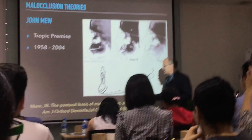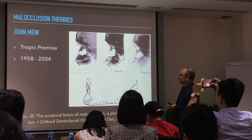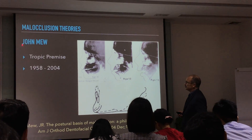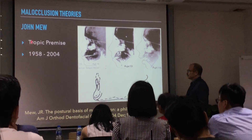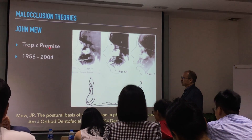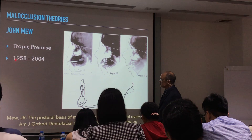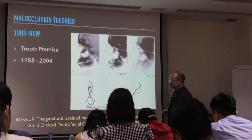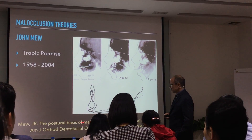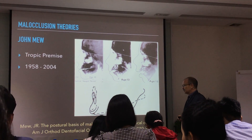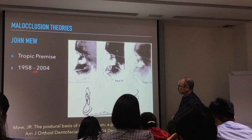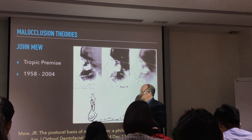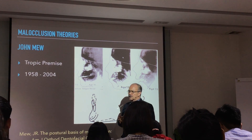This is the functional matrix theory of Moss. He introduced the concept of cavities — for instance, if you lose your eye in an accident, the orbital socket cannot grow. Or if the temporal muscle is paralyzed, the coronoid process becomes very shallow, because the temporal muscle pulls it upward to maintain its form. Functional activity determines morphology. That is the theory of Moss.